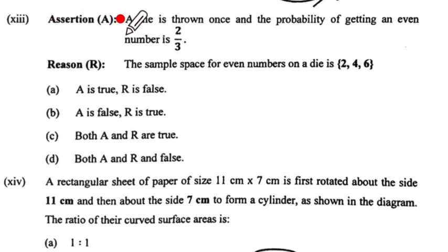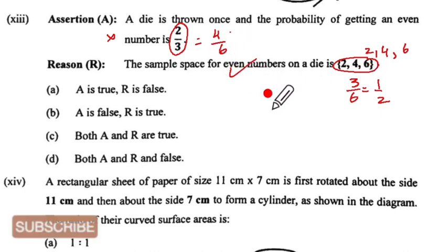Question 13: Assertion A says a die is thrown once and the probability of getting an even number is 2/3. This equals 4/6, right? There are 6 faces, so 6 numbers. The favorable outcomes are 2, 4, and 6. That's 3 out of 6, so basically it should be 1/2, but they're saying 2/3, so they're wrong. Statement R says the sample space of even numbers is 2, 4, 6. Yes, this is correct. So A is false and R is true. Option B is correct.